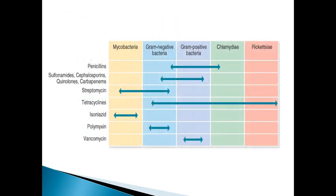Here is an example of various antibiotics and their spectrum of activity. The best-known first antibiotic is penicillin — it is a narrow-spectrum antibiotic effective against gram-positive bacteria and a very small number of gram-negative bacteria and spirochetes. Whereas tetracyclines are effective against gram-positive bacteria, gram-negative bacteria, spirochetes, and Rickettsia. Tetracyclines are called broad-spectrum antibiotics, while polymyxins and vancomycin are called narrow-spectrum antibiotics. You can compare the chart to know the spectrum of activity.